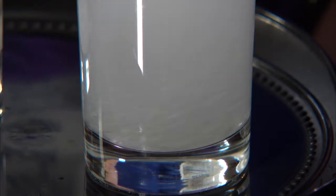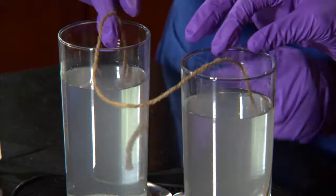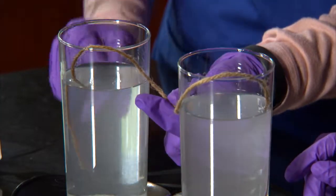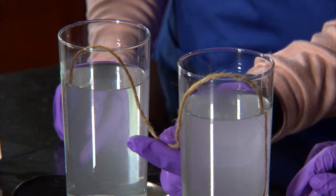We'll take our piece of twine and bend it into an M shape so that the ends are in the saturated solution and the center dips back down and over the plate.